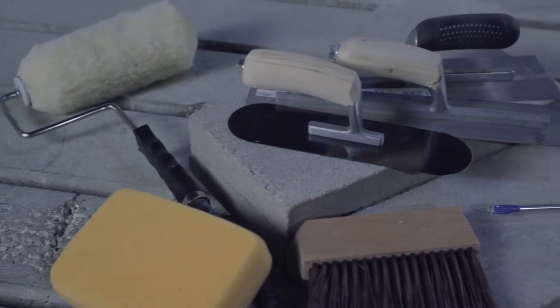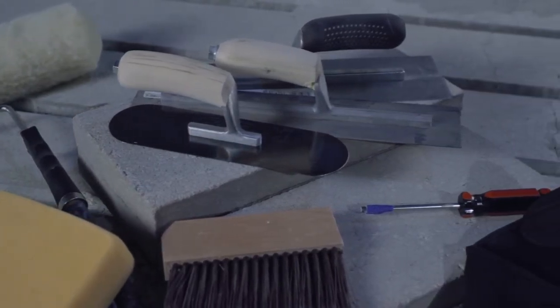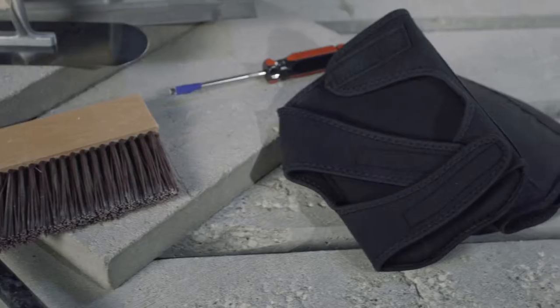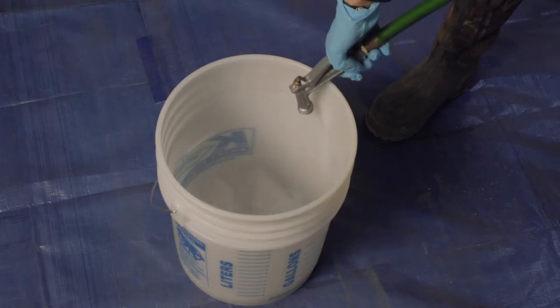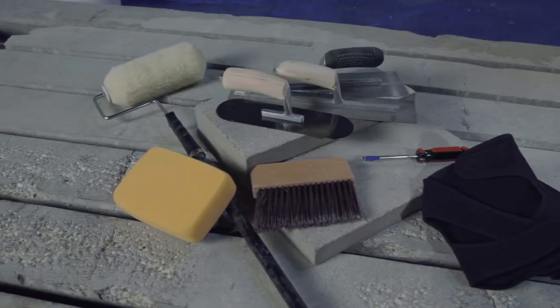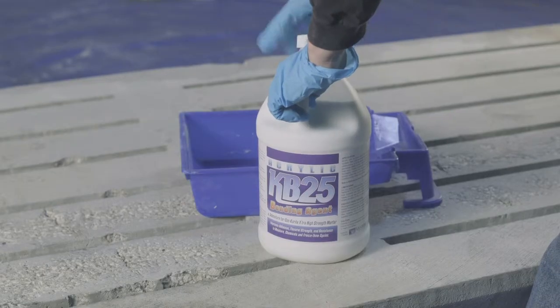Materials needed for applying concorite include concrete trowels of various sizes, knee pads, a grout sponge for surface finishing, a 5 gallon bucket with water for cleaning trowels, a thick nap paint roller, and a roller tray for KB25.